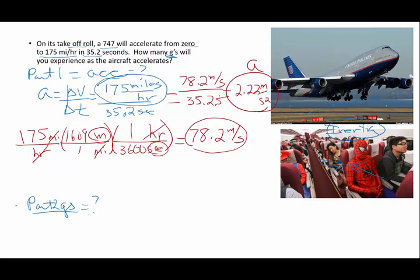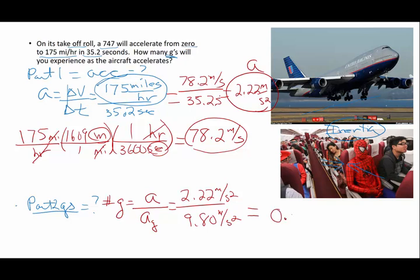Now, I want to know g's. Well, g's, number of g's, is going to be the rate of acceleration divided by the acceleration of gravity. So, my 2.22 meters per second squared, 9.80 meters per second squared. And, when I do that, I ended up with 0.23 g's.